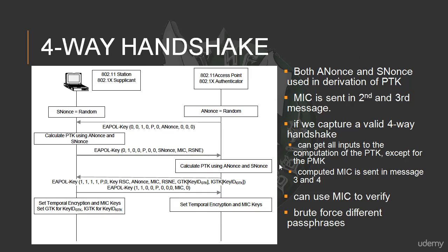The four-way handshake starts with the ANonce sent from the access point. We don't need to know the PMK — we just need to generate a random ANonce and send it. So clearly this is something a fake access point can do without knowing the passphrase. Then the client — the isolated client — will generate an SNonce, calculate a PTK using the ANonce and SNonce, and then send back the MIC. This is valuable information that the attacker now has: the MIC associated with this ANonce, SNonce, and the pairwise master key.